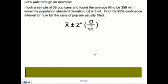Let's walk through an example, then it's easier to see where the numbers fill in. I took a sample of 36 pop cans and found the average fill to be 359 milliliters. I know the population standard deviation is 3 milliliters. Find the 95% confidence interval for how full the cans of pop are usually filled. X bar plus or minus Z star times standard deviation over the square root of n. Let's fill this in and figure out what our numbers are. We found our X bar to be 359 milliliters. That's what we found in our sample.